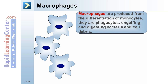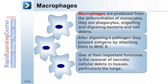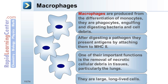Macrophages are produced from the differentiation of monocytes. They are phagocytes, engulfing and digesting bacteria and cell debris. After digesting a pathogen, they present antigens by attaching them to MHC2. One of their important functions is the removal of necrotic cellular debris in tissues, particularly the lungs. They are large, long-lived cells.